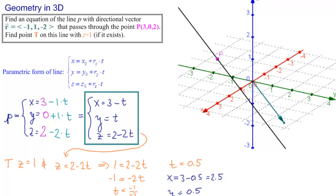So what are the coordinates of T? T is 2.5, 0.5, and the original 1. And this is the answer to the second part of the problem.